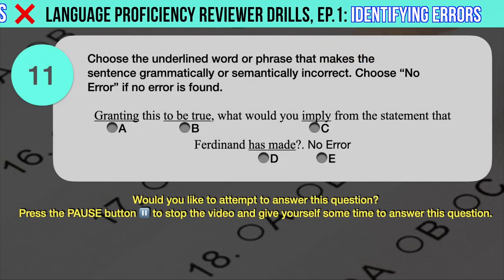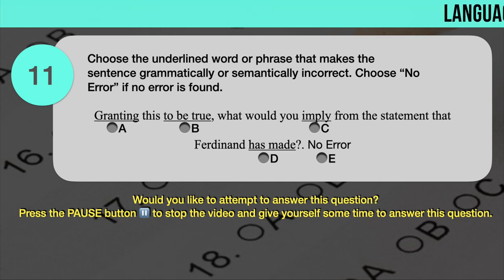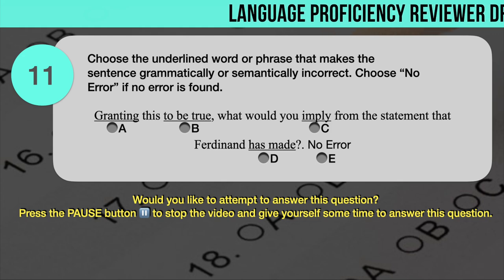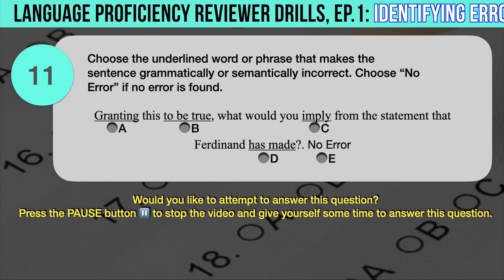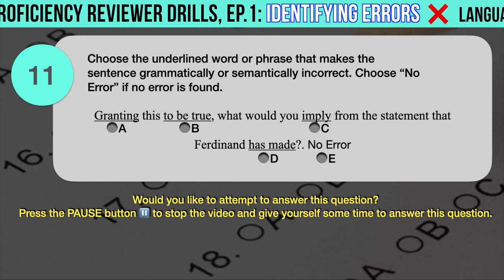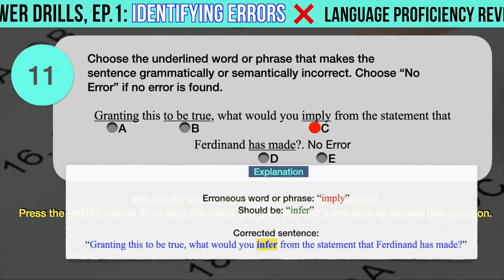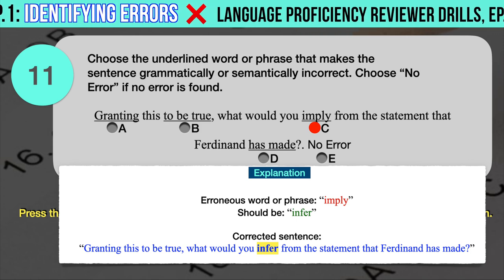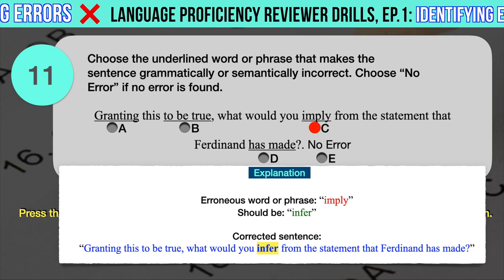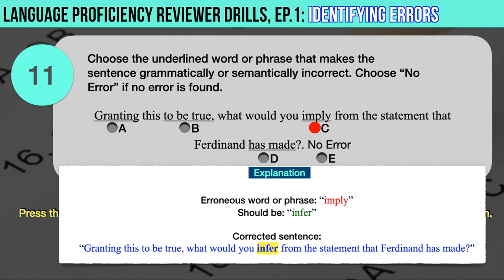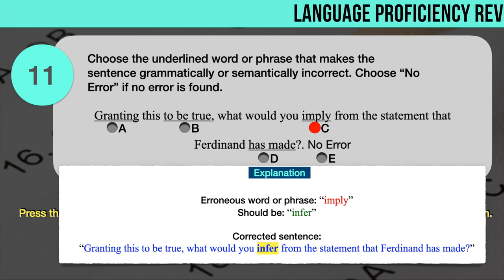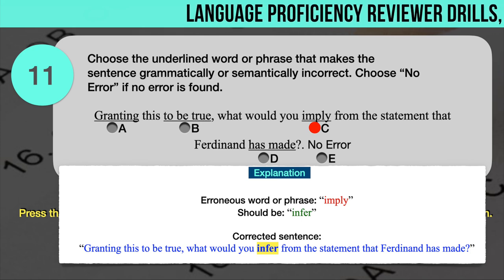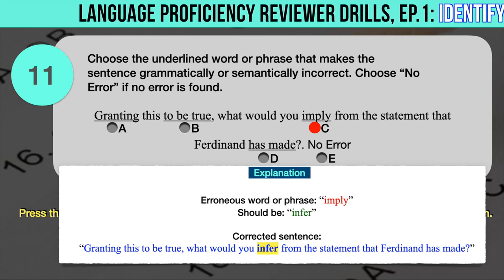Drill question number 11. 'Granting this to be true, what would you imply from the statement that Ferdinand has made?' The underlined words are: A. Granting, B. To be true, C. Imply, D. Has made. The correct answer is C. The erroneous word is 'imply' — it should have been 'infer.' The sentence is grammatically correct but semantically incorrect. 'Imply' means to strongly suggest, whereas 'infer' means to deduce or conclude information from evidence and reasoning, which is what the sentence intends. Correct sentence: Granting this to be true, what would you infer from the statement that Ferdinand has made?